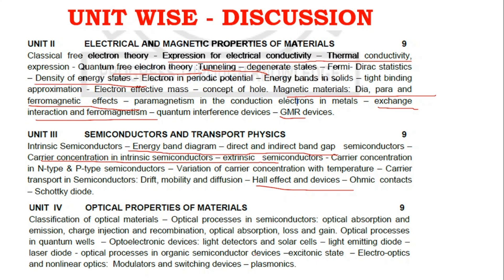In Unit 4, the optical process in semiconductors and optical processes in quantum wells will fill up about 95% of the questions from that unit. Optoelectronic devices — including solar cell, light emitting diode, and laser diode — account for about two questions. Studying optical processes in semiconductors and quantum wells for Unit 4 is more than enough.